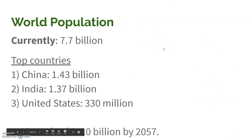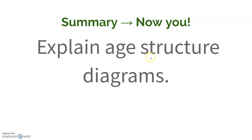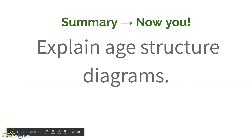Some key facts for the AP exam: our current world population is 7.7 billion, projected to hit 10 billion by 2057. The top countries by population size are China at 1.4 billion, India at 1.37 billion, and the United States at 330 million. Now it's your turn to explain age structure diagrams and what kind of information you can get from them.